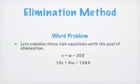When we combine those two equations, we have C plus W equals 205 and 10C plus 4W equals 1084. That's how we set this kind of problem up. We're going to go to the board now and solve it.